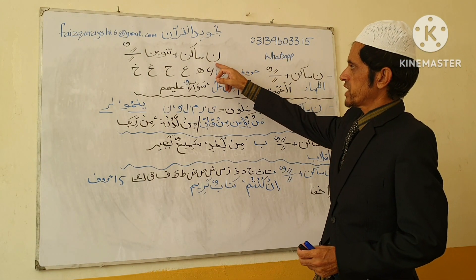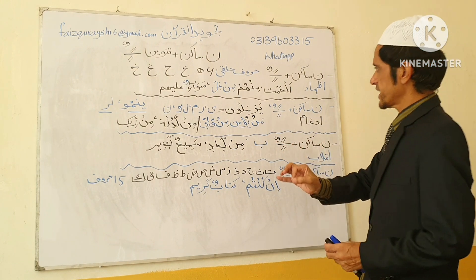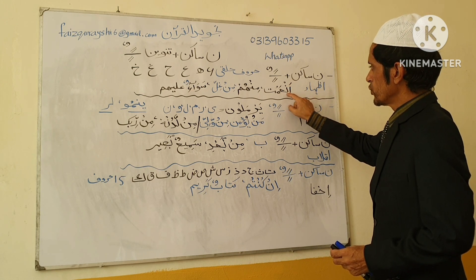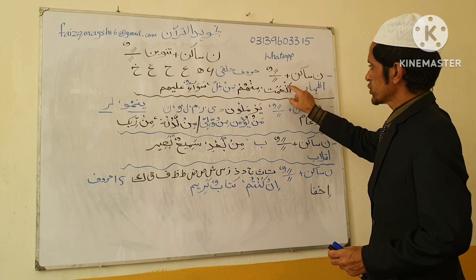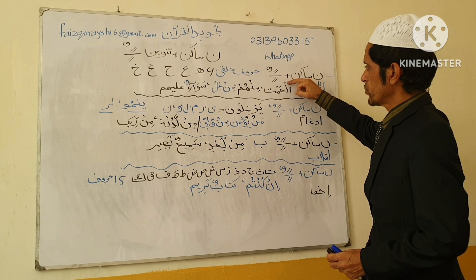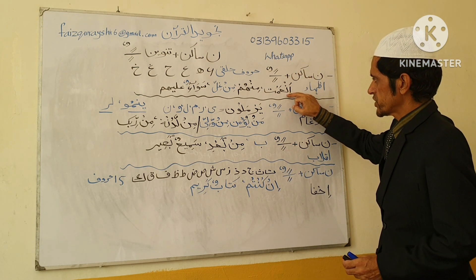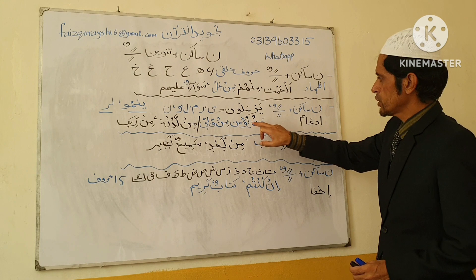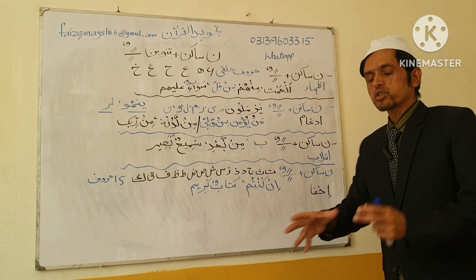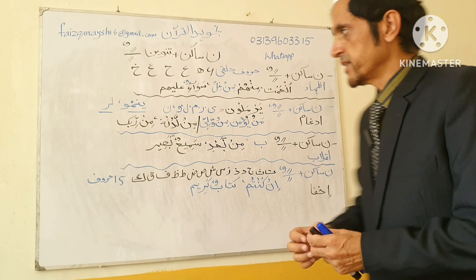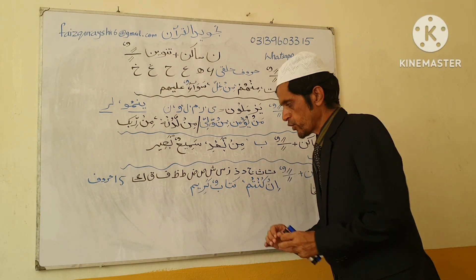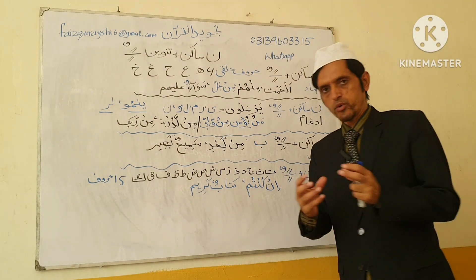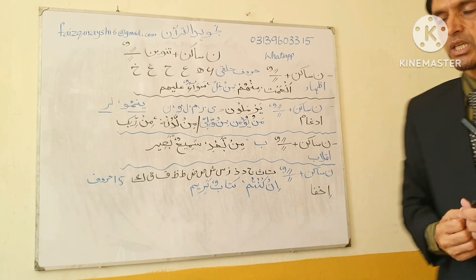This is Meem Saakin. For example: 'An-Aanta' — here is Meem Saakin with the Sukun symbol above it. Also 'Min Hum' — here is Meem Saakin. Meem Saakin has four important rules which are followed whenever you read or recite the Holy Quran, and following these rules will bring beauty to your recitation.